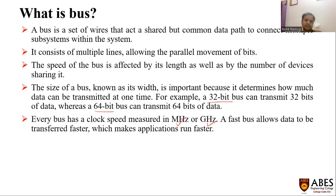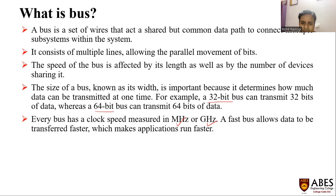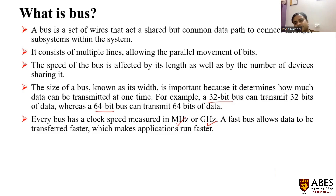If there is a bus having 2 gigahertz speed, it means it will process the data in terms of 2^30 × 2 bits, which equals 2^31 bits at a time.